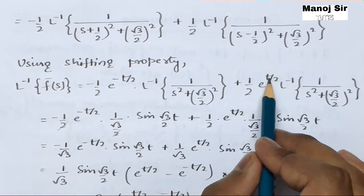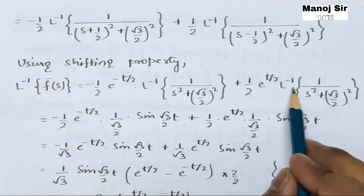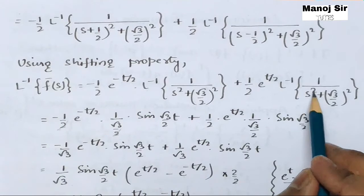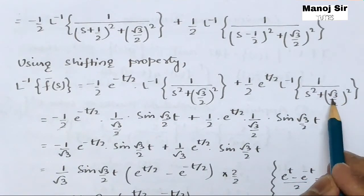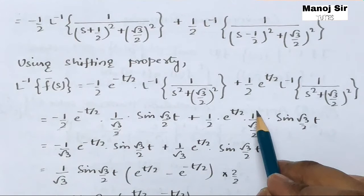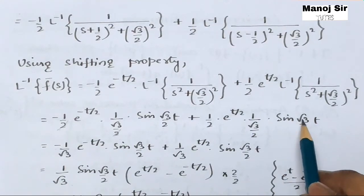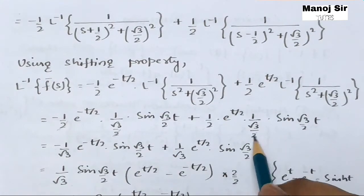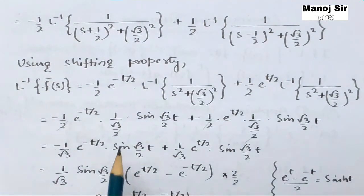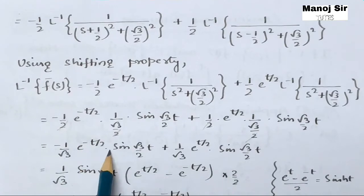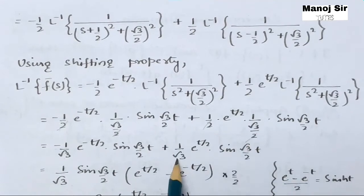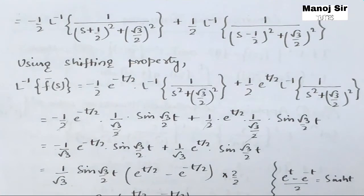Applying the formula to both terms: = −(1/√3)·e^(−t/2)·sin(√3t/2) + (1/√3)·e^(t/2)·sin(√3t/2).